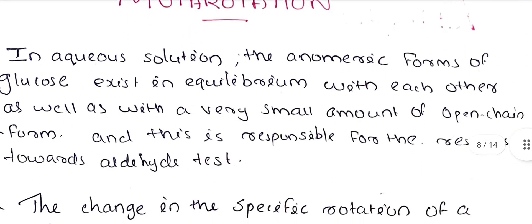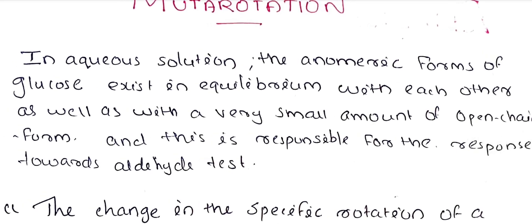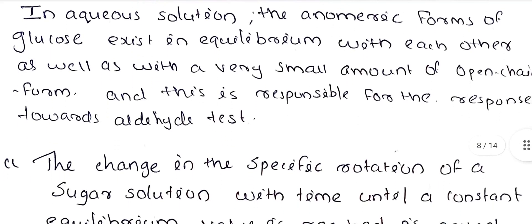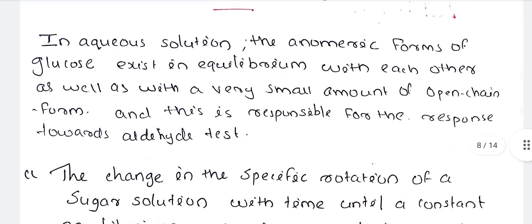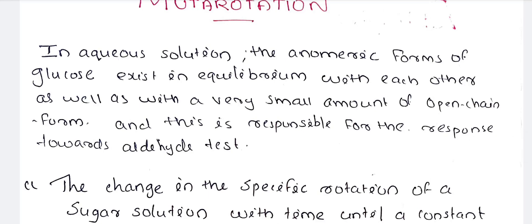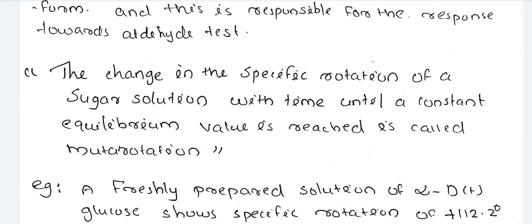In aqueous solution, the anomeric forms of glucose exist in equilibrium with each other, as well as with a very small amount of the open-chain form. This open-chain form is responsible for a positive response towards the aldehyde test. The change in the specific rotation of a sugar solution over time until a constant equilibrium value is reached is called mutarotation.